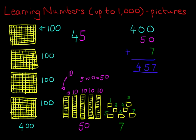So it's 4, 5. And how many individual blocks were there? There were 7. So that is the answer. 457. Let's give it a nice big tick.